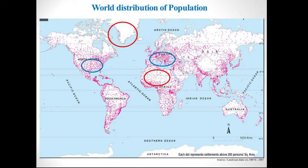Blue color circle shows higher density of population as there are more number of dots. If there are more number of dots, then there is a higher density of population. And lesser the number of dots, lesser the density of population.